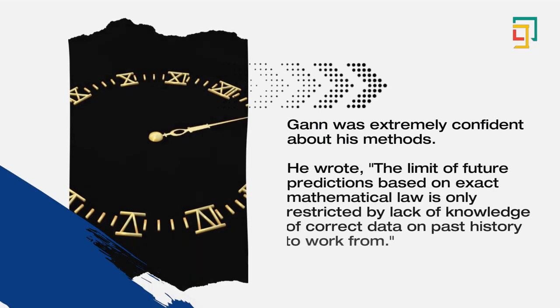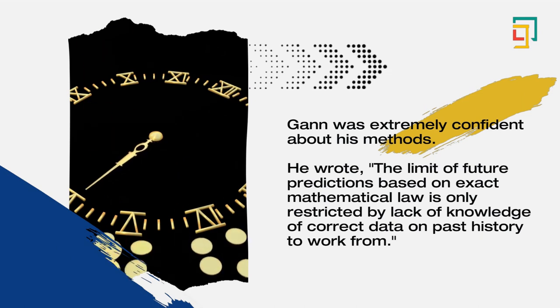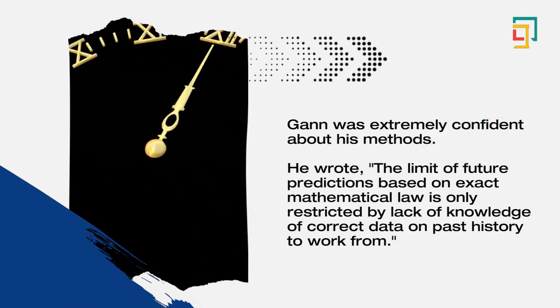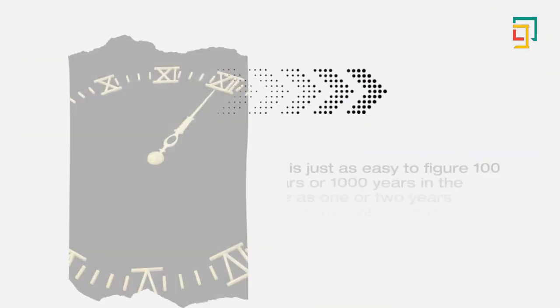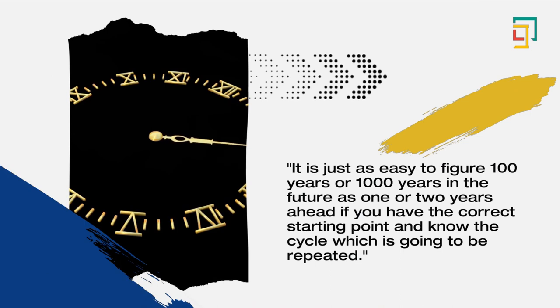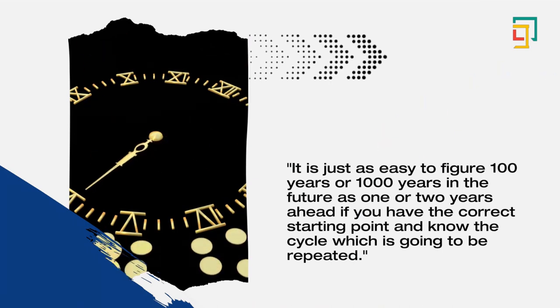Gann was extremely confident about his methods. He wrote: The limit of future predictions based on exact mathematical law is only restricted by lack of knowledge of correct data on past history to work from. It is just as easy to figure 100 years or 1000 years in the future as one or two years ahead if you have the correct starting point and know the cycle which is going to be repeating.